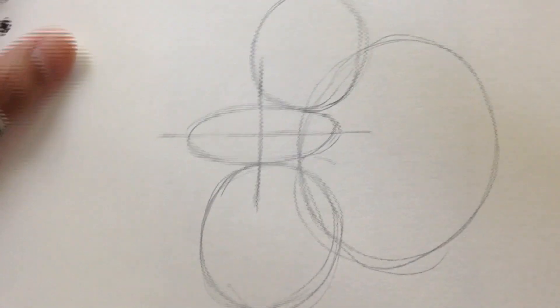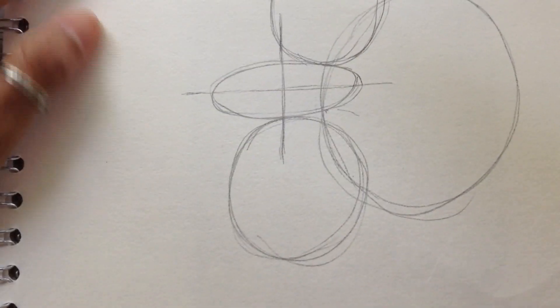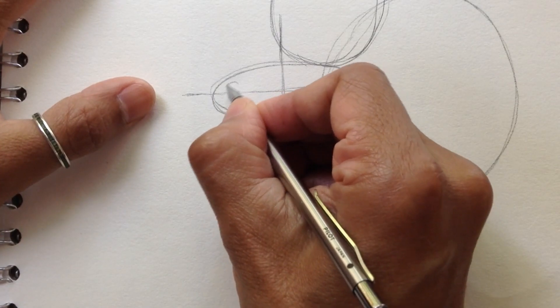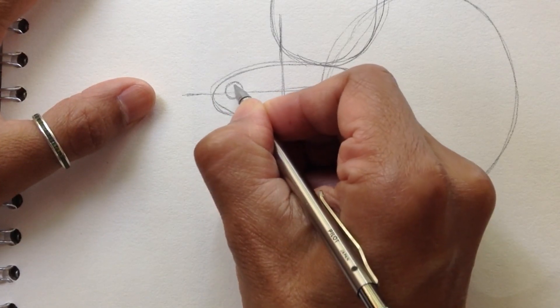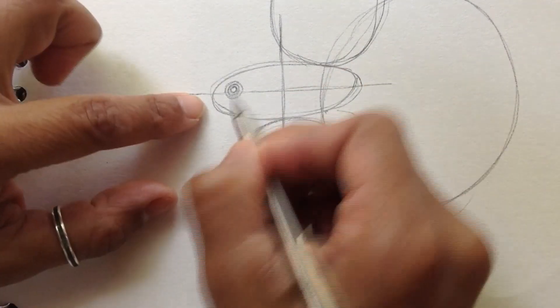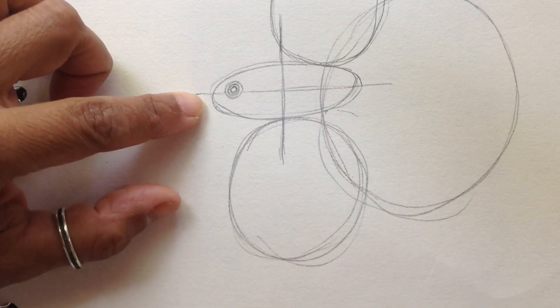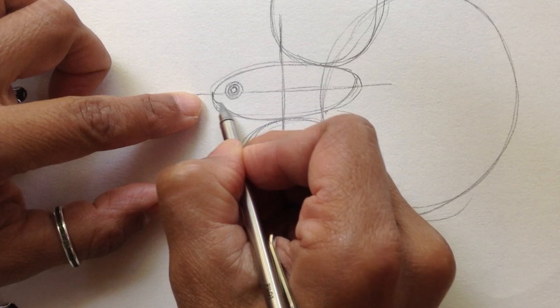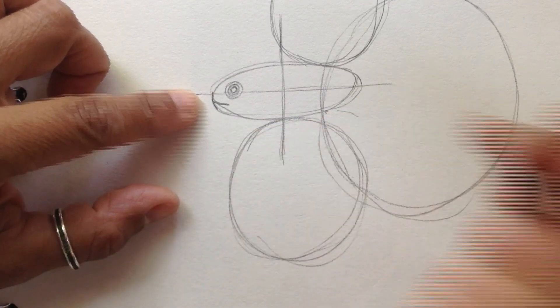Now I am going to make a circle for the eye. Another circle and another circle. The eye is very close to the mouth. So the mouth is here.